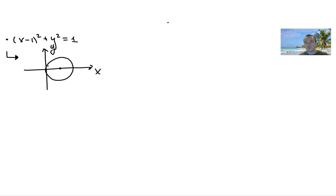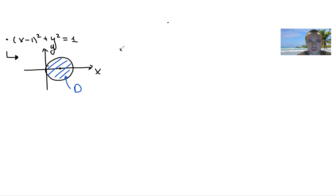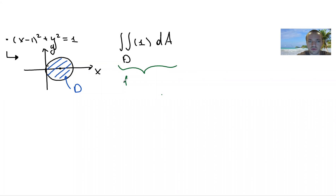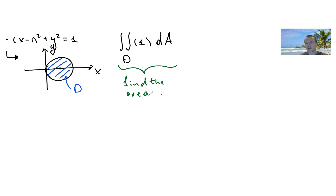I want to use a double integral for this. My region D is the inside of the circle, and I want to evaluate the double integral over D of 1 dA. This integral finds the area of region D. Every time you want to find the area of some region, you take the double integral over that region where your function is equal to one.